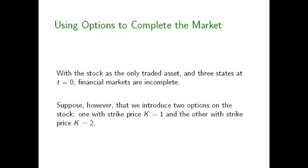If in this economy the stock is the only traded asset, because there are three possible states at T equals one, we know in advance that financial markets are going to be incomplete. There is no way of using information about the price and the payouts on the share of stock alone to figure out what all three contingent claims prices for all three states a year from now are going to be. Suppose, however, that in addition to the stock, we introduce two options on the stock: one with strike price K equals one and the other with strike price K equals two.